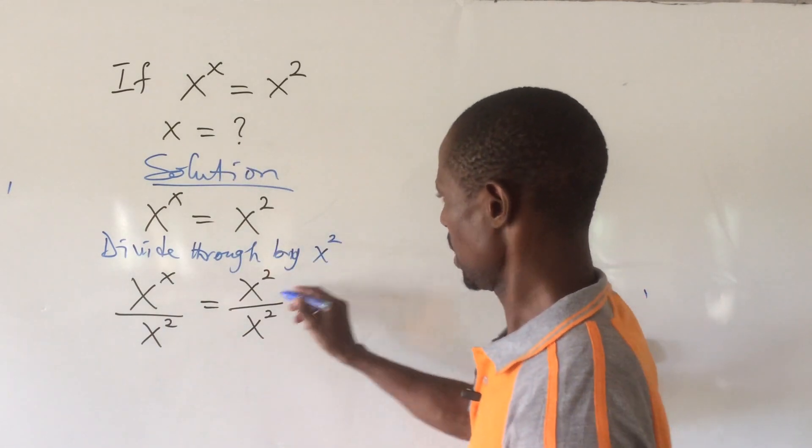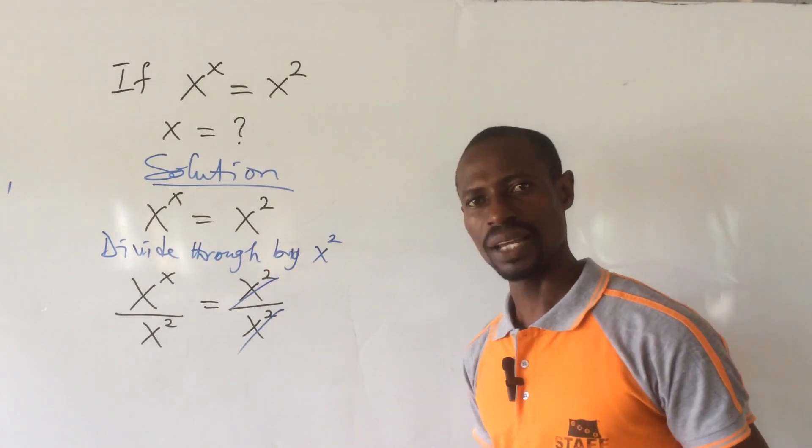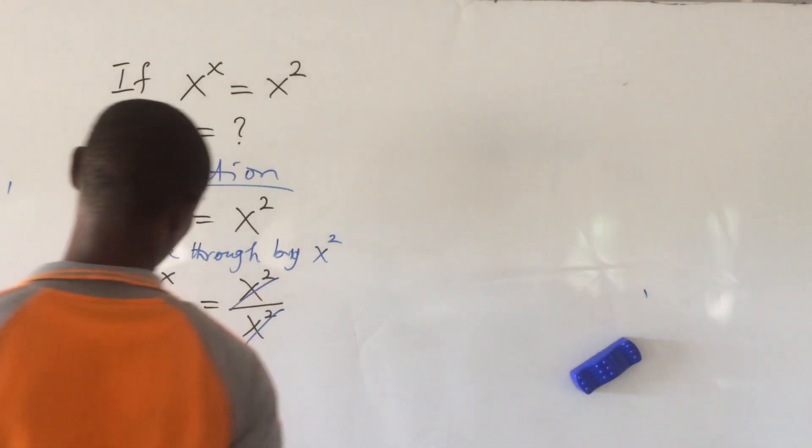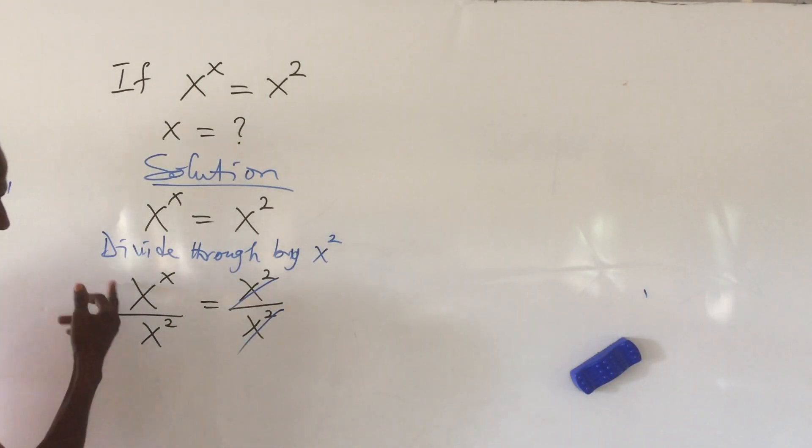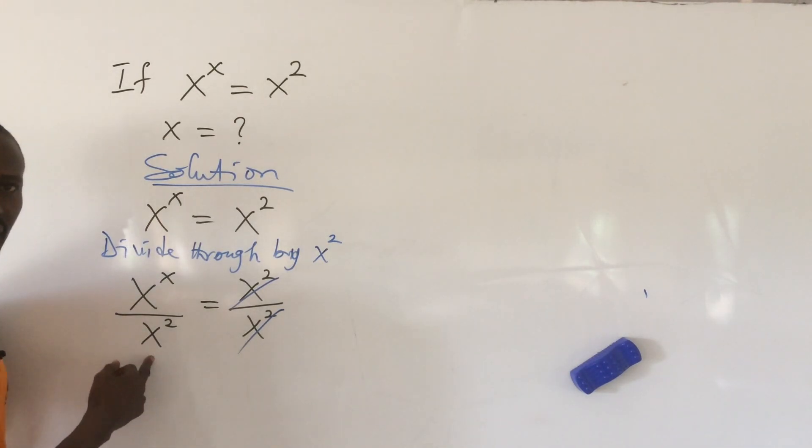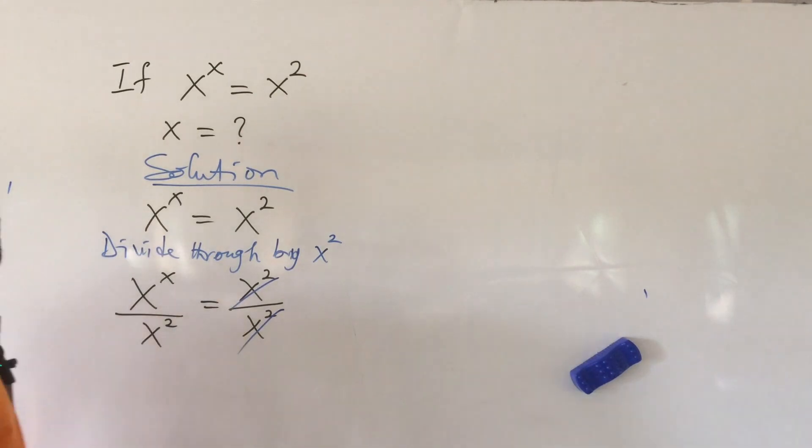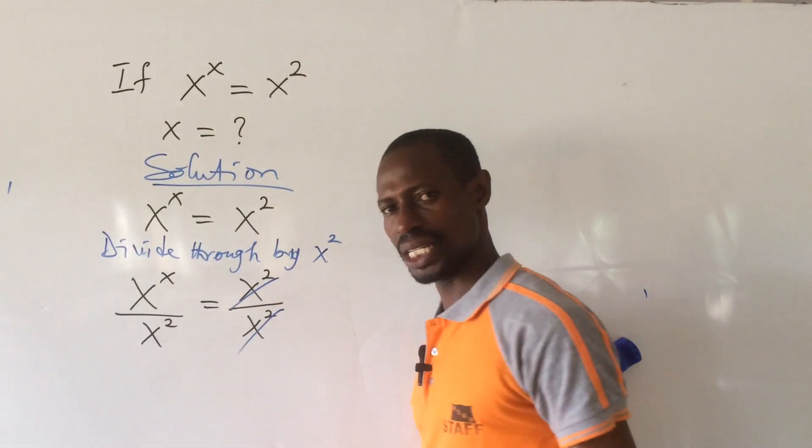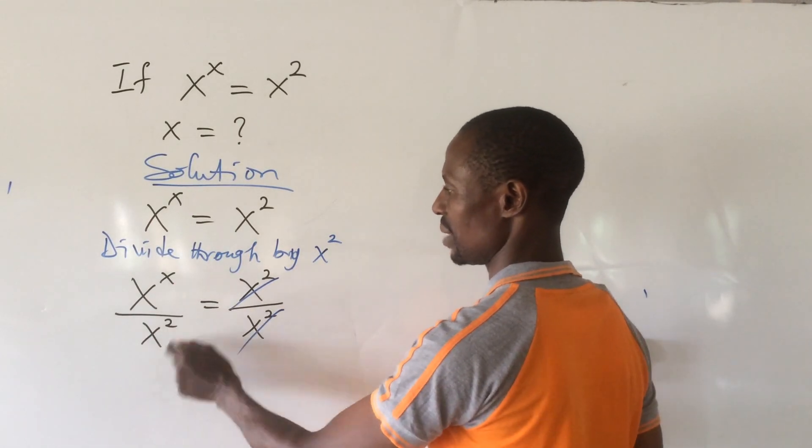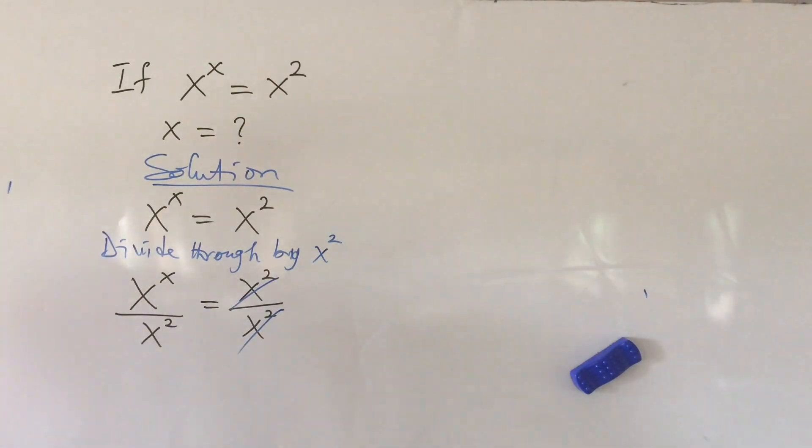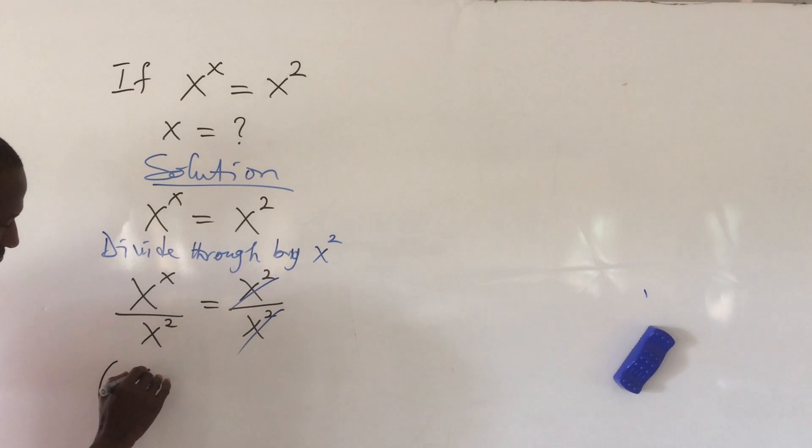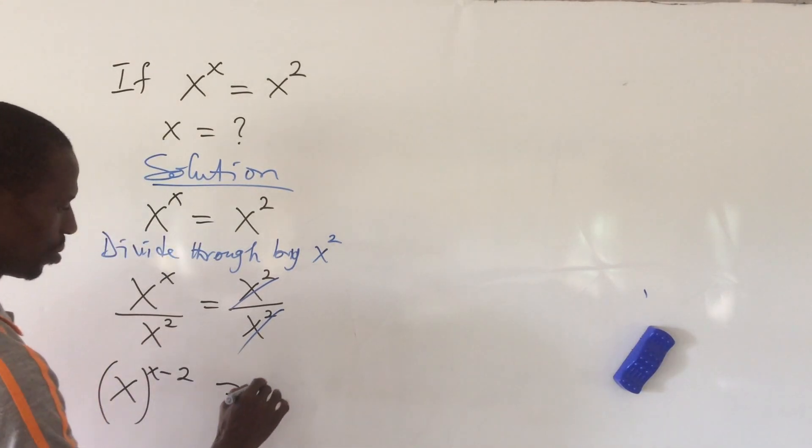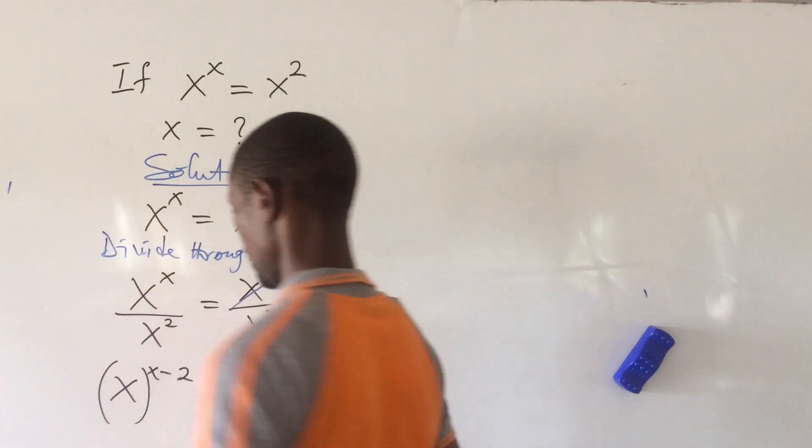All right. Now on this side, we're left with 1. Then if we go by the law of indices, this is x as a base. It's also having the same base at the bottom. So we have a divisional sign here. So we can carry out the law of division of indices that says when the bases are the same, subtract the powers. So this will give us x to the power of x minus 2 equal to 1 on this other side.